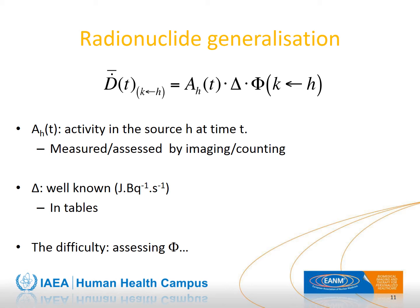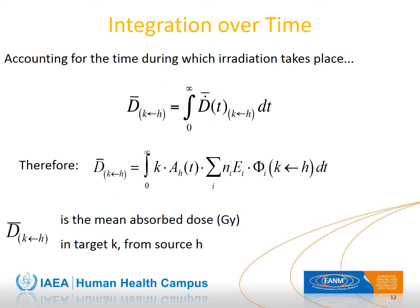The activity in the source is measured or assessed in the nuclear medicine department by imaging or counting. Delta is well known as it's a characteristic of the isotope. The difficulty is to assess the specific absorbed fraction. Accounting for time, the absorbed dose is the integral of the absorbed dose rate over time, integrated from zero (injection time) to infinity (when all radioactivity has been cleared), yielding the mean absorbed dose in gray in target K from source H.